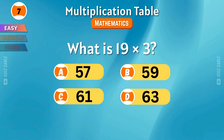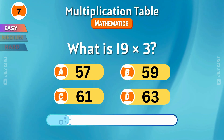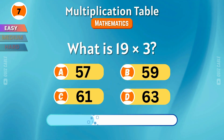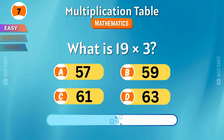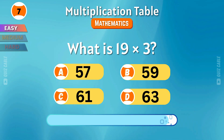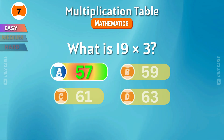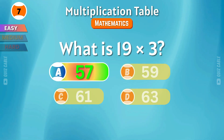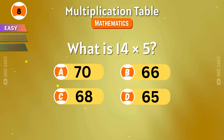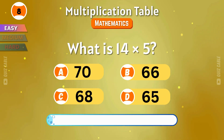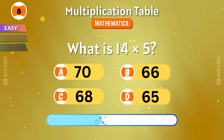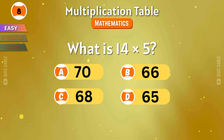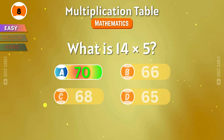What is 19 times 3? The total is 57! What is 14 times 5? That's 70!